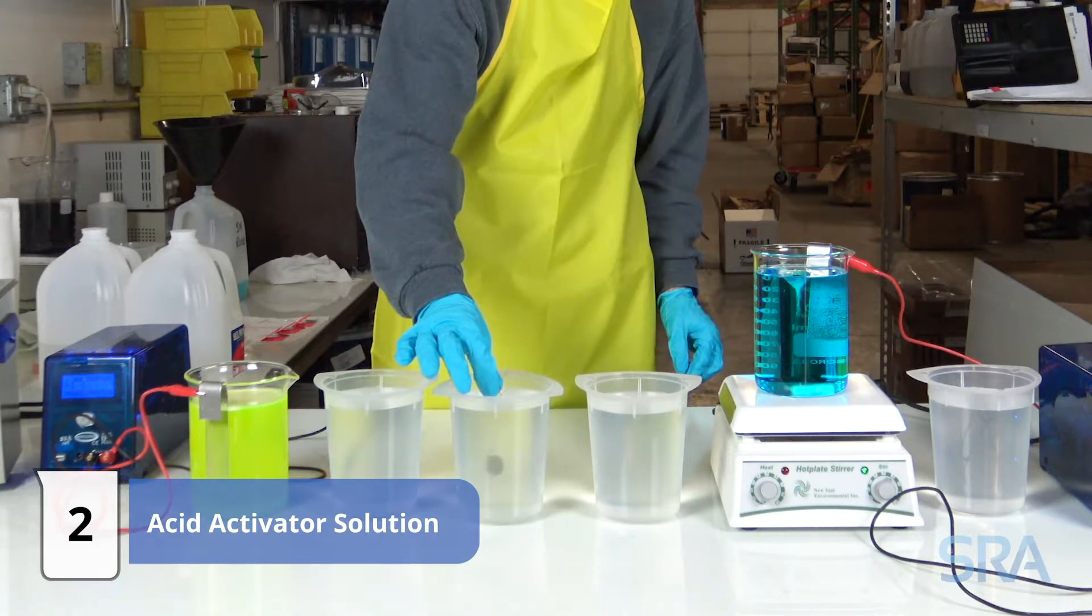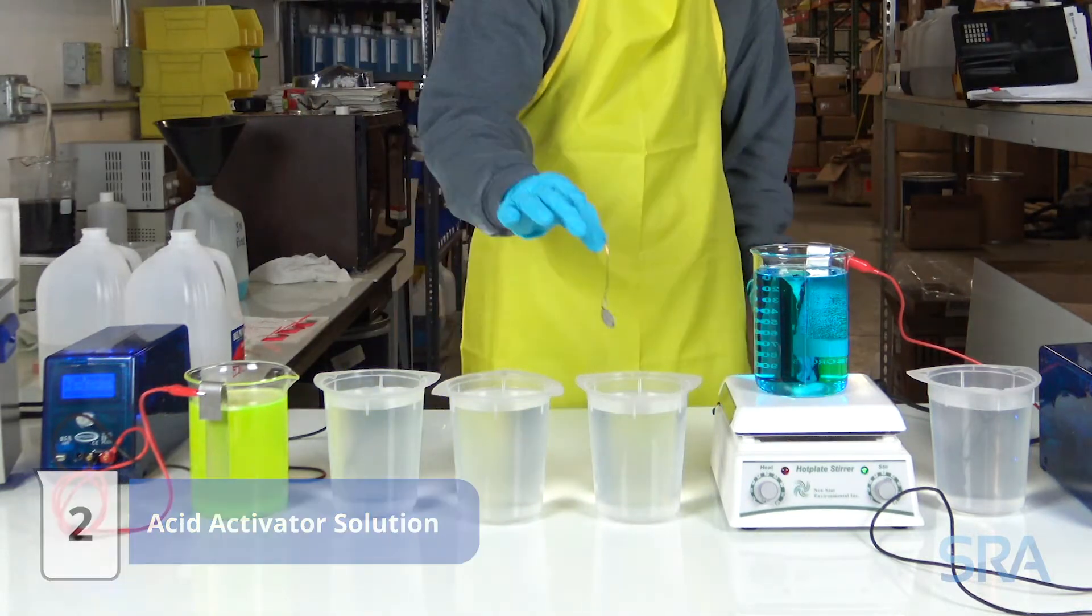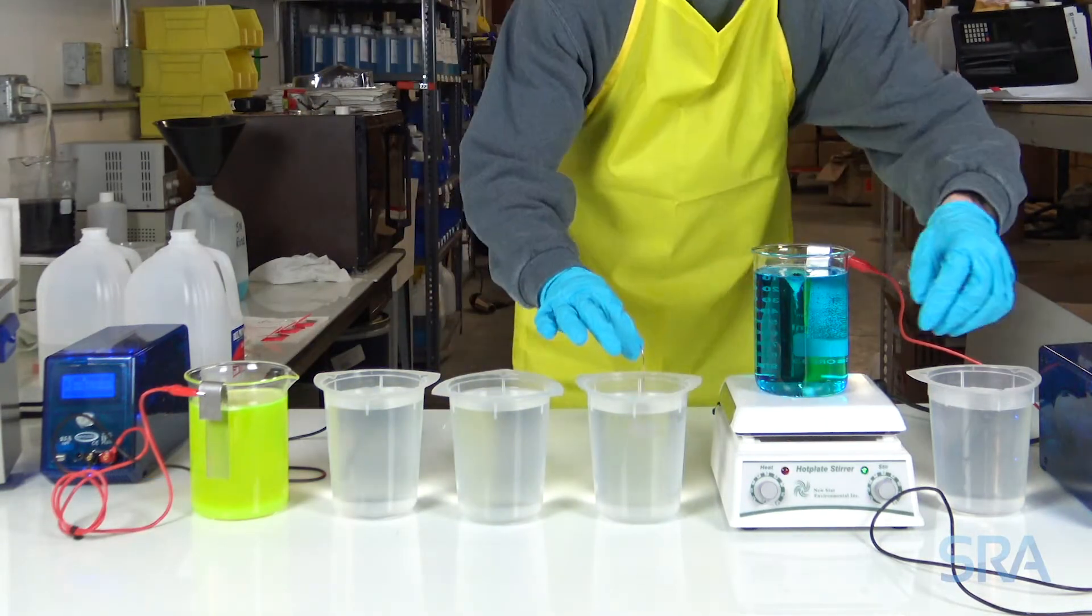Next, acid activate for a few seconds and follow it up with another distilled water rinse. This will neutralize the electro cleaner soap.